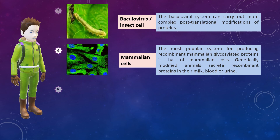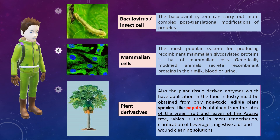Let's see one more example from the plant category — the papaya tree. These plant tissue-derived enzymes, which have application in the food industry, must also be non-toxic and should be edible plant species. For example, papain enzyme is obtained from the latex of the green fruits and leaves of the papaya tree, and is used in meat tenderization, clarification of beverages, digestive aids, and wound cleaning solutions.